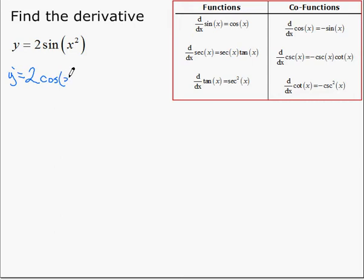Based on the chain rule, that's the cosine of x squared multiplied by the derivative of whatever argument the trigonometric function had. So in this case, the derivative of x squared, which is 2x. Simplifying then gives us 4x cosine of x squared.